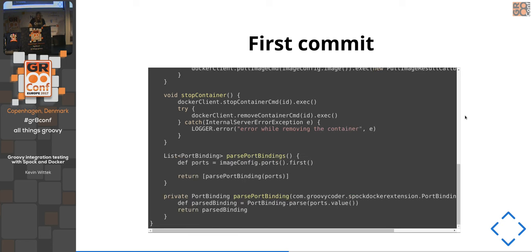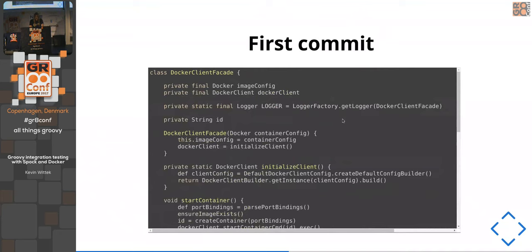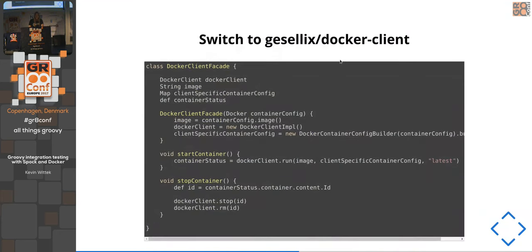Then I found the Groovy Docker client library by Tobias Gesellchen, who also has a cool Docker Gradle plugin. The same functionality is now in Groovy, which is a much nicer way to interact with Docker from a Groovy project. I strongly suggest looking into this library if you ever want to interact with Docker in a Groovy project.